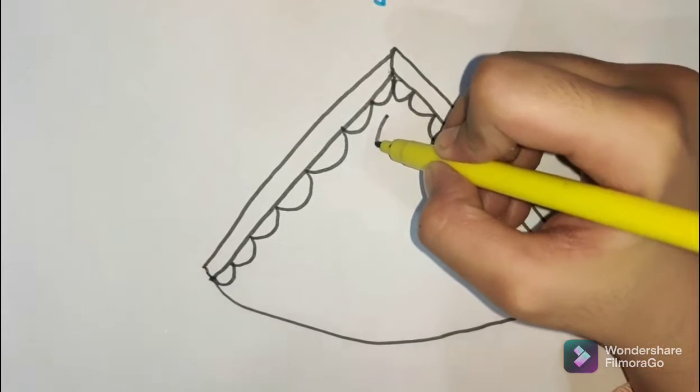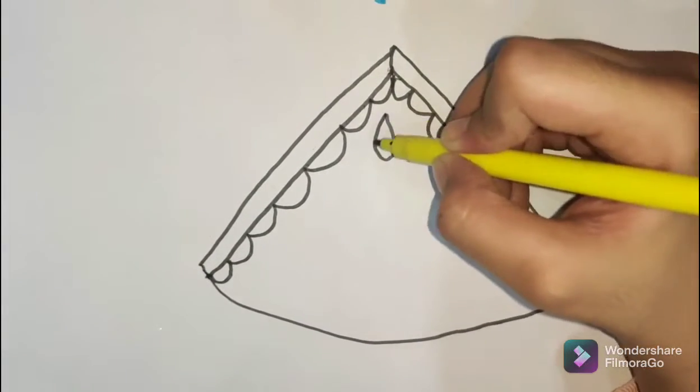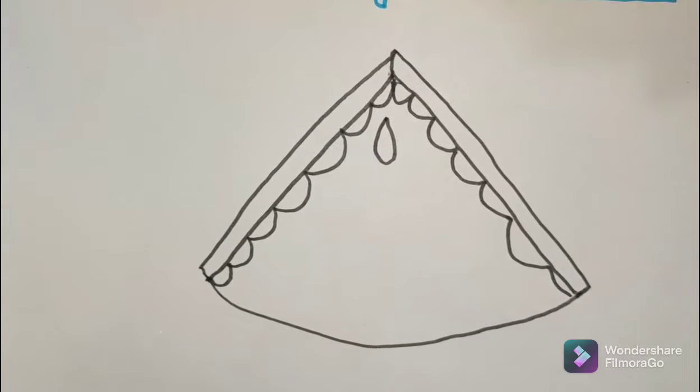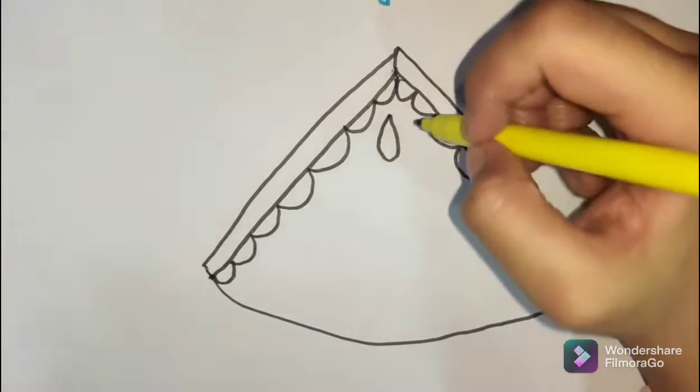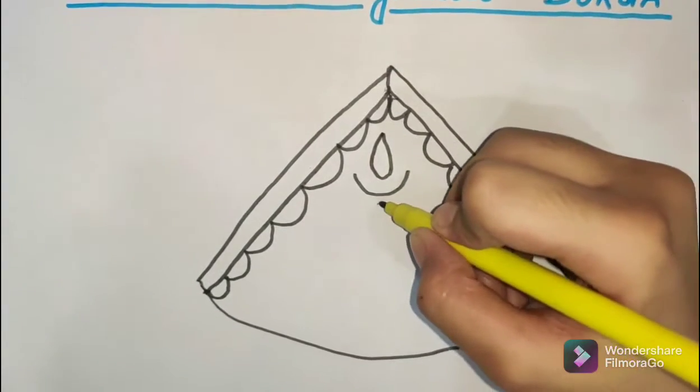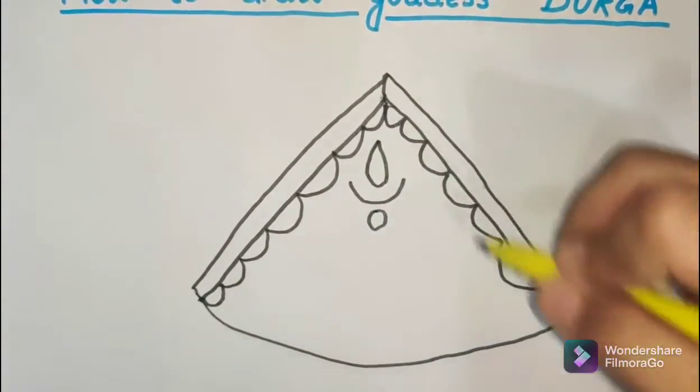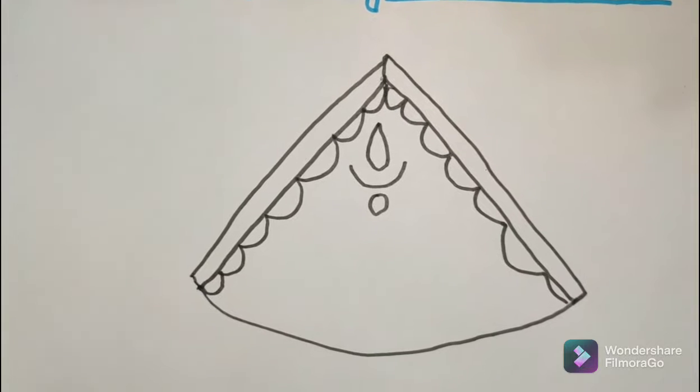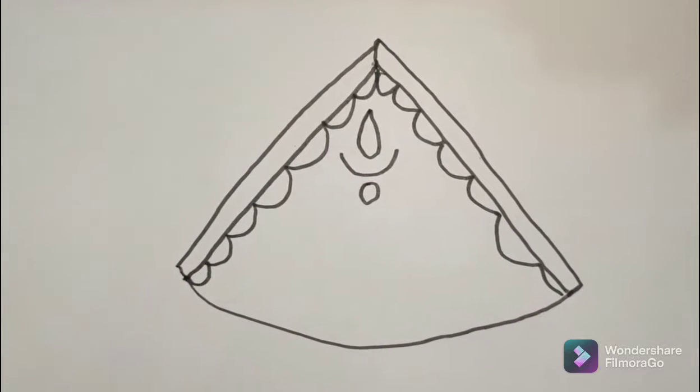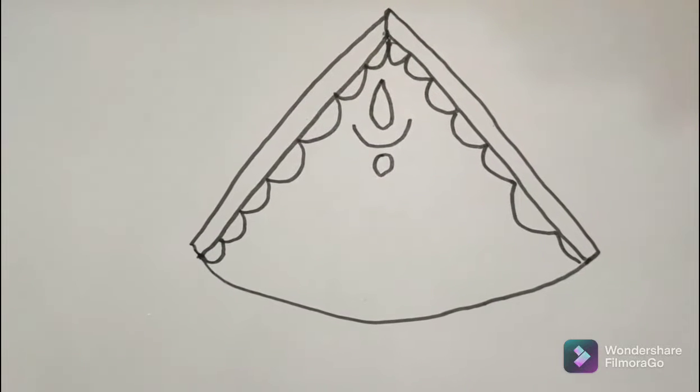Sometimes in pujas we make this symbol to show fire. We need to make this as a tikka. Now we have to make a smile and a dot underneath it as a tikka. I know making real life eyes is kind of hard, but I got an easy way to make that too.